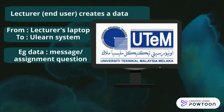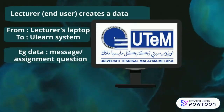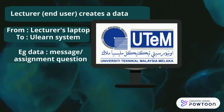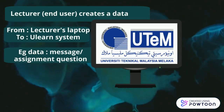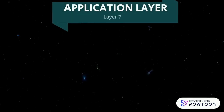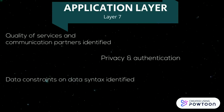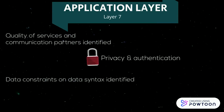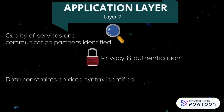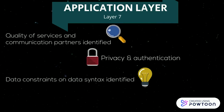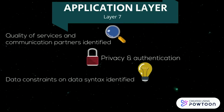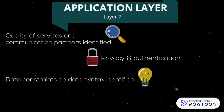Firstly, a lecturer creates data — for example, an assignment question — that will be sent to the Ulearn system. The application layer, which is layer 7 of the OSI model, supports application and end-user processes. Here, the quality of service is identified, and authentication and privacy are considered.